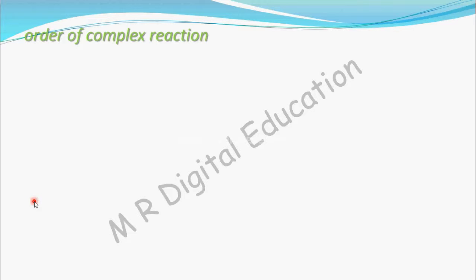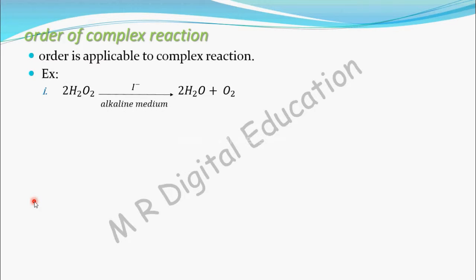Now, order of complex reactions. A complex reaction is a multi-step reaction. How do we find the order of this multi-step or complex reaction? Let's see with an example. You know that 2H₂O₂ in alkaline medium gives 2H₂O and O₂, and this is a complex reaction — it takes place in two steps.